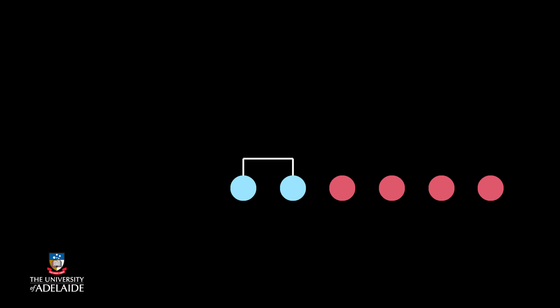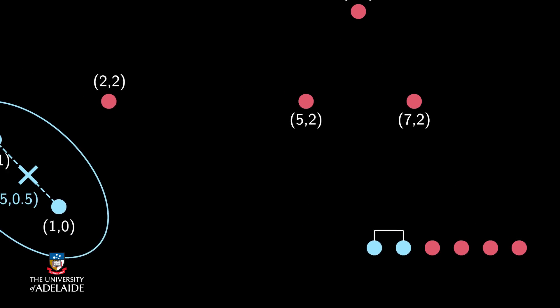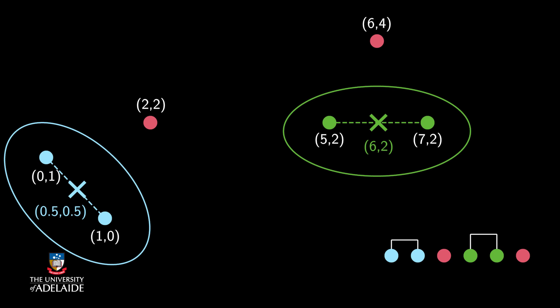In the next step, the algorithm merges two closest clusters. In this case, (5,2) and (7,2). The new cluster that is formed has a centroid at (6,2). After this iteration, I now have four clusters.